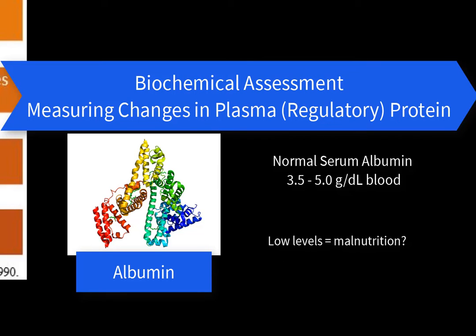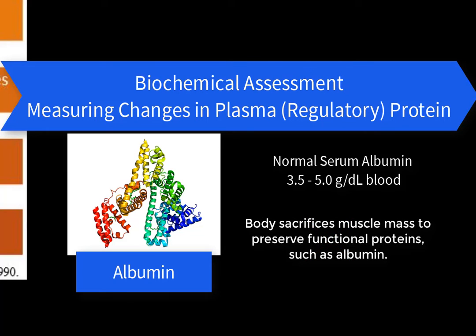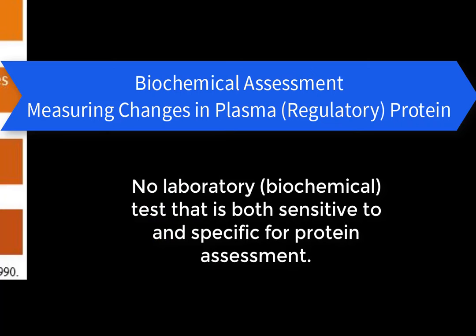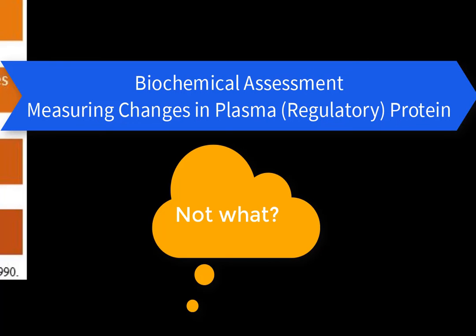Although albumin has been used as a marker for malnutrition for over 100 years, we now know that — with the exception of extremely low protein intake below 3% of total calories — serum albumin is not a suitable marker for malnutrition. The body catabolizes muscle mass in deference to maintaining functional and regulatory proteins including albumin. In other words, the body sacrifices muscle mass to provide amino acids to maintain blood protein production. Serum albumin will be preserved with classic malnutrition from lack of dietary intake, and there is no laboratory test both sensitive to and specific for protein assessment.